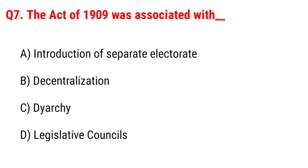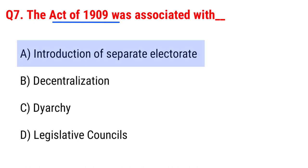Next question: the Act of 1909 was associated with Option A, introduction of Separate Electorate; B, Decentralization; C, Diarchy; D, Legislative Council. The right answer is Option A, introduction of Separate Electorate.